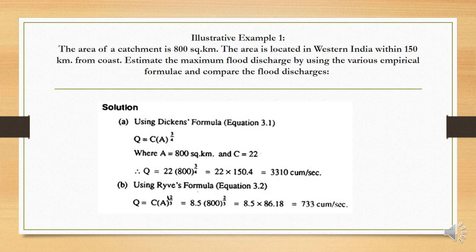Second, using Ryve's formula for the same example. The area is within 150 km from the coast, so C = 8.5. Q = 8.5 × 800^(2/3). Solving this gives Q = 7333 m³/s.